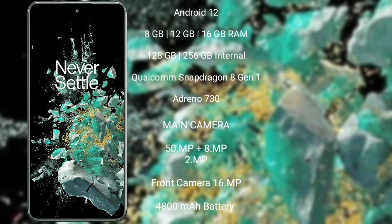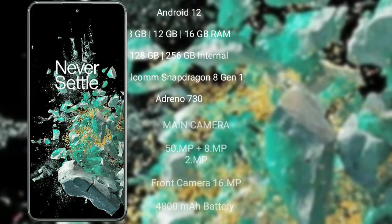OnePlus 10T features a triple-camera setup of 15MP plus 8MP plus 2MP, and its front camera is 16MP. It has a 4800mAh battery with 150W fast charging support.